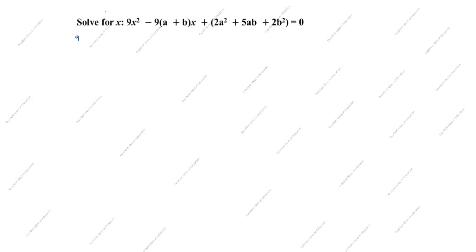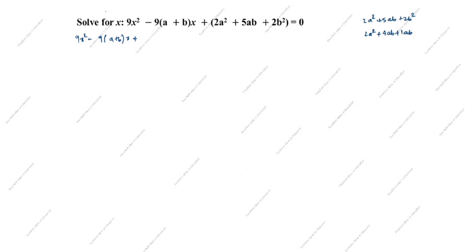The given question is 9x² minus 9(a+b)x plus (2a²+5ab+2b²) equals 0. We will split the term 2a²+5ab+2b². We have 2a², then 5ab — we will split 5ab as 4ab plus 1ab.